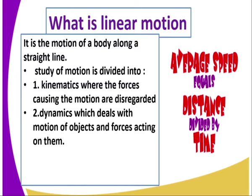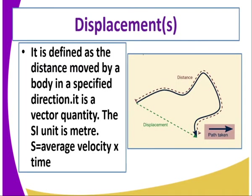The terms we need to understand in linear motion include average velocity and distance, which is given by distance covered per unit time. Displacement is defined as the distance moved by a body in a specified direction. It is a vector quantity, meaning it has both magnitude and direction. The SI unit used to express displacement is meters.